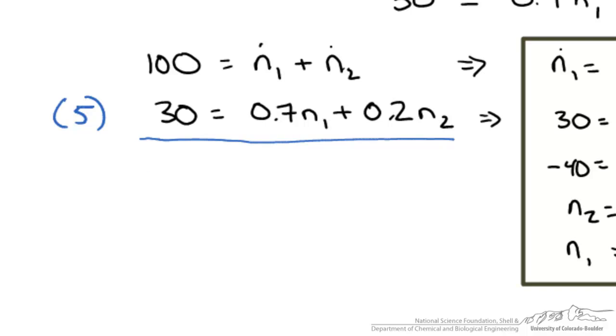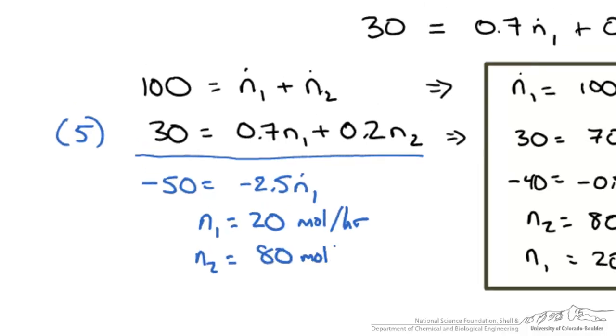So in doing so we get negative 50 equals negative 2.5n1. So right away we can solve for n1. So this gives us 20 moles per hour and we can plug it back in and see that n2 is equal to 80 moles per hour.